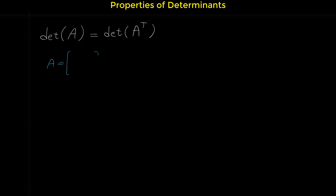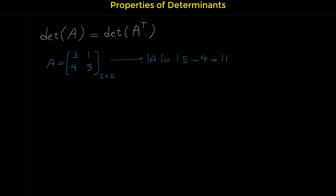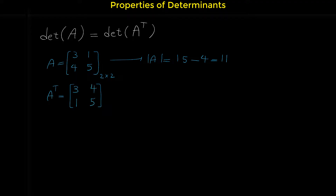Let me show you an example with a 2 by 2 matrix: 3, 1, 4, 5. The determinant of matrix A is 3 times 5 minus 1 times 4, which is 15 minus 4 = 11. Now for the transpose, we make the rows into columns: the first row 3, 1 becomes the first column, and 4, 5 becomes the next column. The determinant of A transpose is 3 times 5 minus 4 times 1, which is 15 minus 4 = 11. As you can see, these two numbers are the same.